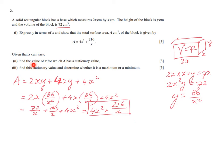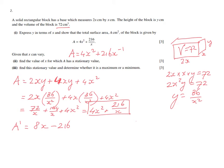Given that x can vary, we need to find the value of x for which A has a stationary value — that is where the gradient is zero, at a maximum or minimum. To find the gradient of A, rewrite 216 over x as 216x to the power of minus 1. Differentiating gives dA/dx equals 8x plus 216 times minus 1 times x to the power minus 2, which is 8x minus 216 over x squared.